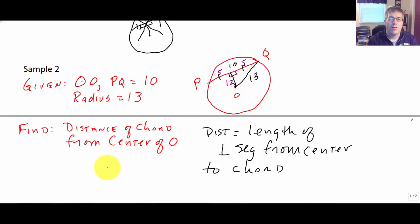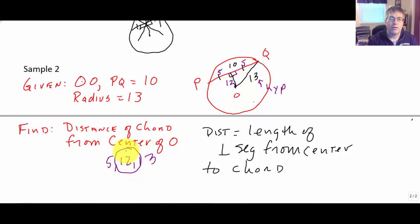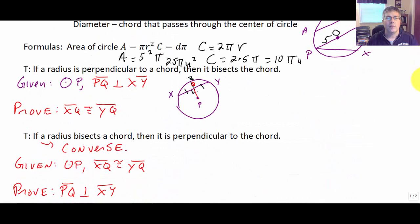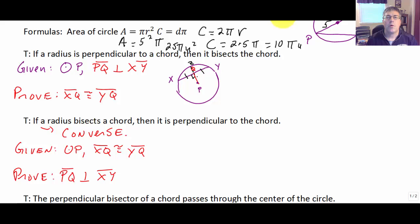We now have a right triangle, and we recognize this as a 5-12-13 right triangle, where our radius is the hypotenuse. So the distance of the chord from the center of the circle is 12 units. You'll also be using these theorems as reasons in proofs, and we'll get more practice on that when I see you in class.